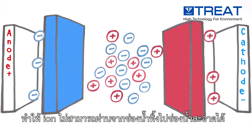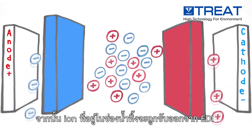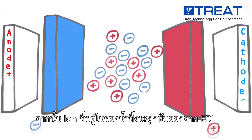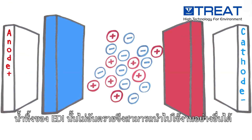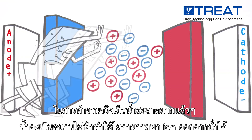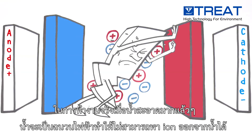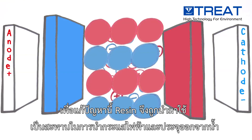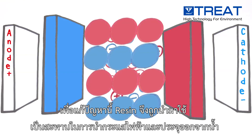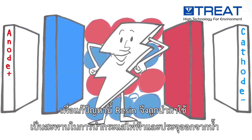The trapped ions are flushed out with the reject stream, which is then discarded, recycled, or processed further. However, low conductivity feed waters inhibit passage of the electric current that transports ions. That's where the resin comes in — it acts as a bridge to carry electric current and ions through the module.